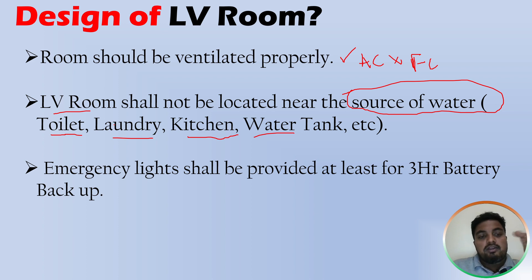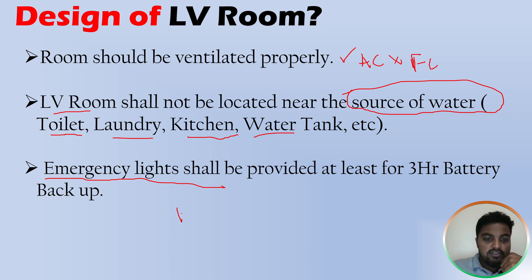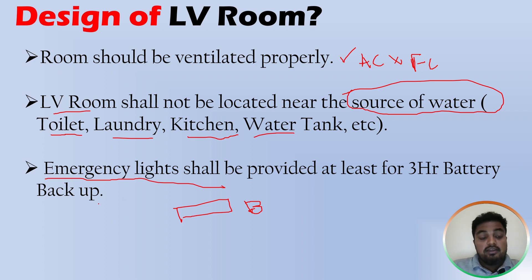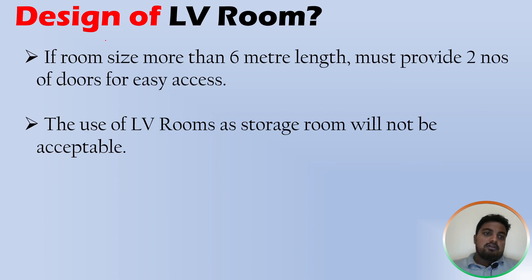The next point: emergency lights shall be provided in the LV room with at least three hours of battery backup. You must provide at least one emergency light inside the LV room with an inbuilt battery for three-hour backup. In any emergency situation, when power is disconnected, this light will remain on for up to three hours.